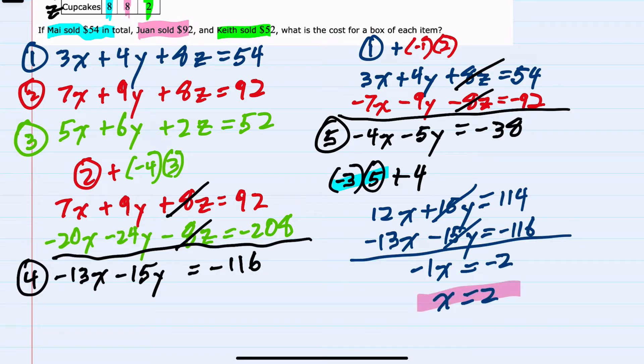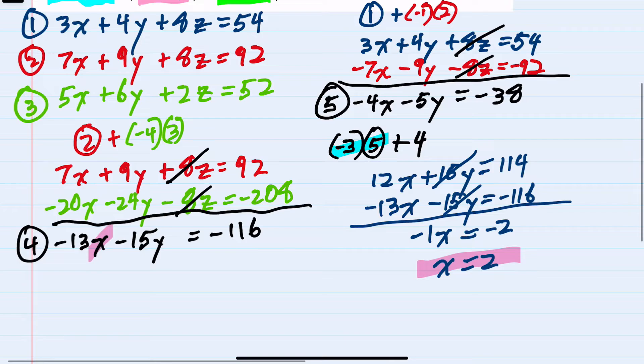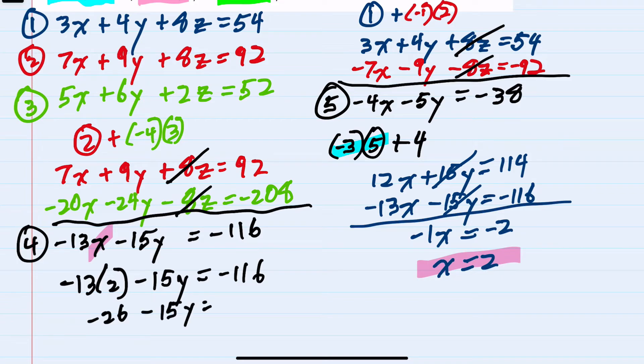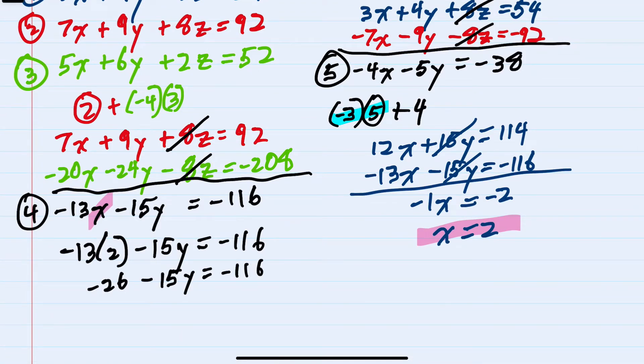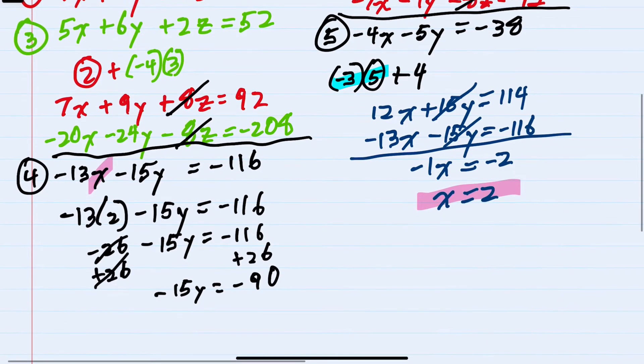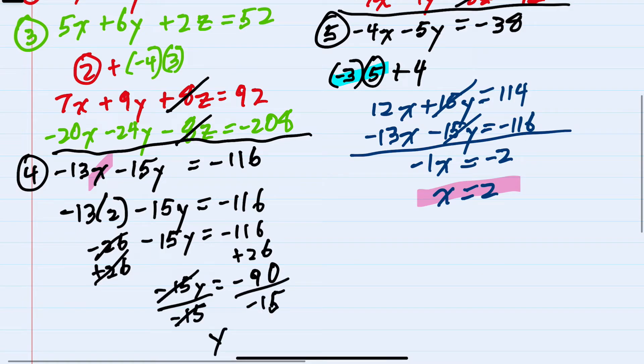So our X value is a positive 2. We have found our first value. And now that we know what X is, we can substitute that into either equation 4 or 5 here to find Y. I'll substitute it into equation 4. Knowing that X is a 2 would give us a negative 13 times 2 minus 15Y equals negative 116. Simplifying on the left, negative 13 times 2 is a negative 26 minus 15Y equals negative 116. Isolating the Y term would mean adding 26 to both sides. So negative 15Y equals negative 116 plus 26 would be a negative 90. And then solving for Y, we divide by negative 15 and Y equals negative 90 divided by negative 15 would be a positive 6. So we now know what X is. We know what Y is.